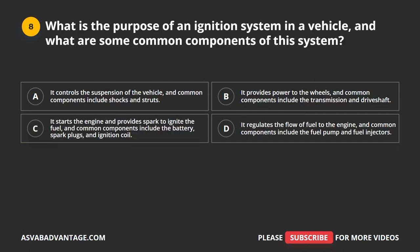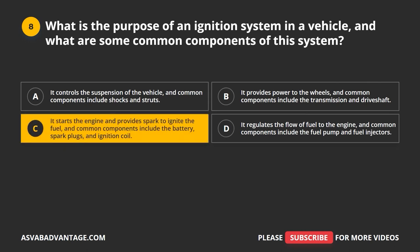Question 8. What is the purpose of an ignition system in a vehicle, and what are some common components? A. It controls the suspension of the vehicle, and common components include shocks and struts. B. It provides power to the wheels, and common components include the transmission and drive shaft. C. It starts the engine and provides spark to ignite the fuel, and common components include the battery, spark plugs, and ignition coil. D. It regulates the flow of fuel, and common components include the fuel pump and fuel injectors. The correct answer is C: it starts the engine and provides spark to ignite the fuel, with common components including the battery, spark plugs, and ignition coil.